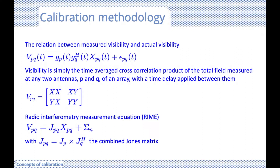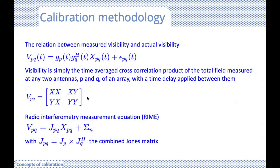To simplify our notation, we introduce Jones matrices. Each visibility is simply the time-average cross-correlation product of the total field measured at any two antennas — P and Q — with a time delay applied between measurements. Putting these cross-correlation products into matrix notation makes the notation conveniently compact. Although it hides many details, conceptually it allows us to describe the impact and distortions in a fairly readable way.